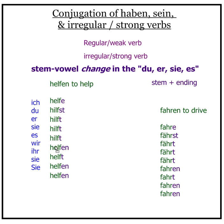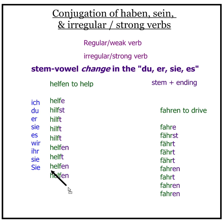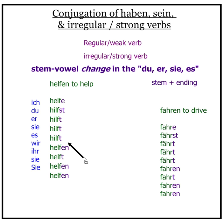The vowel appearing in the verb helfen, to help, is an 'e'. When you conjugate helfen to du, er, sie, es, that 'e' changes to an 'i'. So: ich helfe, du hilfst, er/sie/es hilft. Wir helfen, ihr helft, sie/Sie helfen.